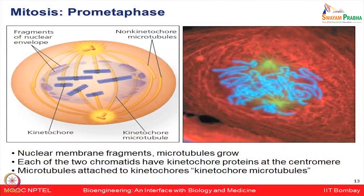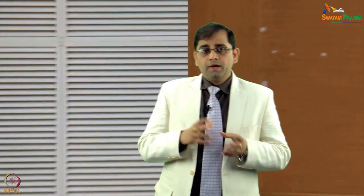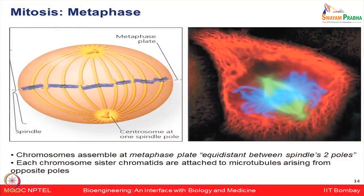In prometaphase, the cell prepares for division and starts orienting toward the two poles. The nuclear membrane starts fragmenting and microtubules begin growing. Each of the two chromatids has kinetochore proteins at the centromere, and microtubules attach to those kinetochores — these are called kinetochore microtubules. The chromosomes and chromatids start trying to align toward the metaphase plate but have not yet fully aligned.